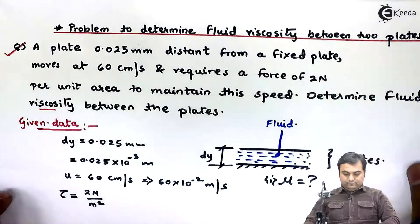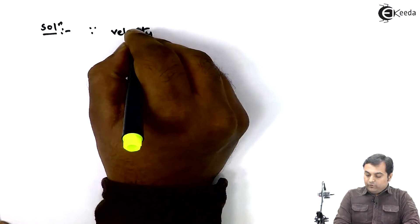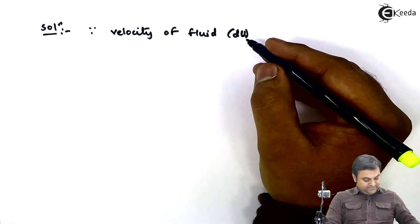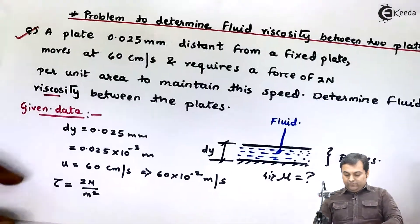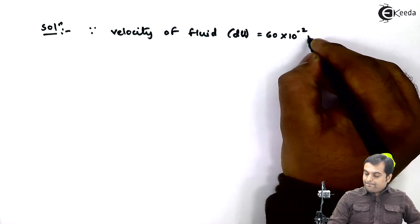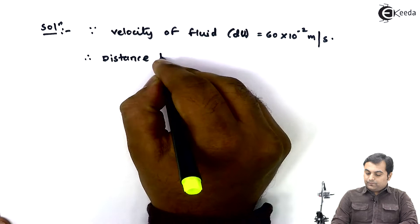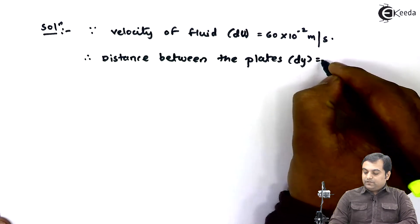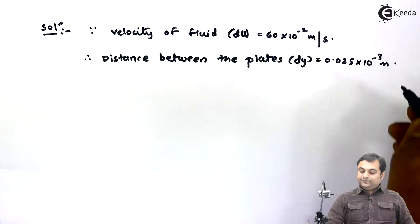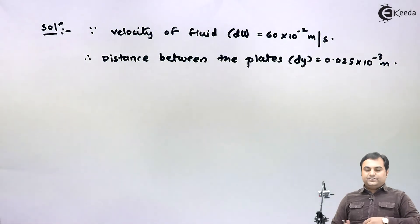Since the velocity of the fluid is denoted by du, that is equal to the final velocity minus the initial. Since only one value of velocity is given, du equals u, which is 60 into 10 raise to minus 2 meters per second. The distance between the plates, dy, is 0.025 into 10 raise to minus 3 meters.